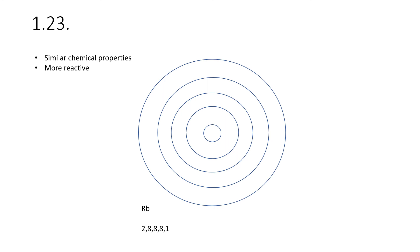Moving further down the group, rubidium would have two in the first, eight in the second, eight in the third, eight in the fourth, and one in the fifth. Because it has one electron in the outer shell, it reacts in a similar way to the others. However, as you move down group one the elements get more reactive, so rubidium would be much more reactive than lithium.